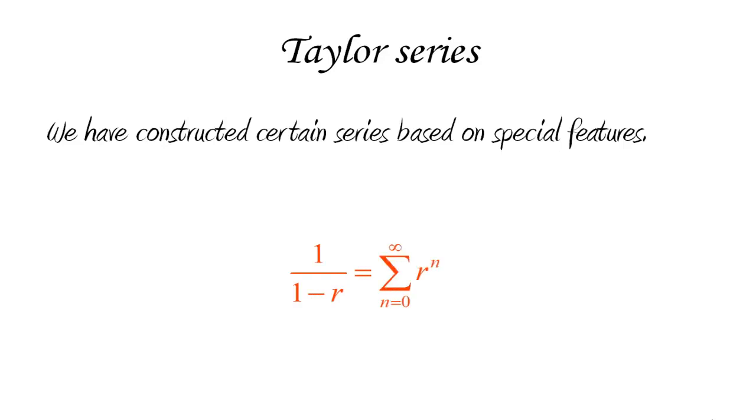For instance, we noticed that the geometric series, which has the form sum from 0 to infinity of some number r to the power n, sums up to the expression 1 over 1 minus r. This was a very special case that turned out to be easy to prove.